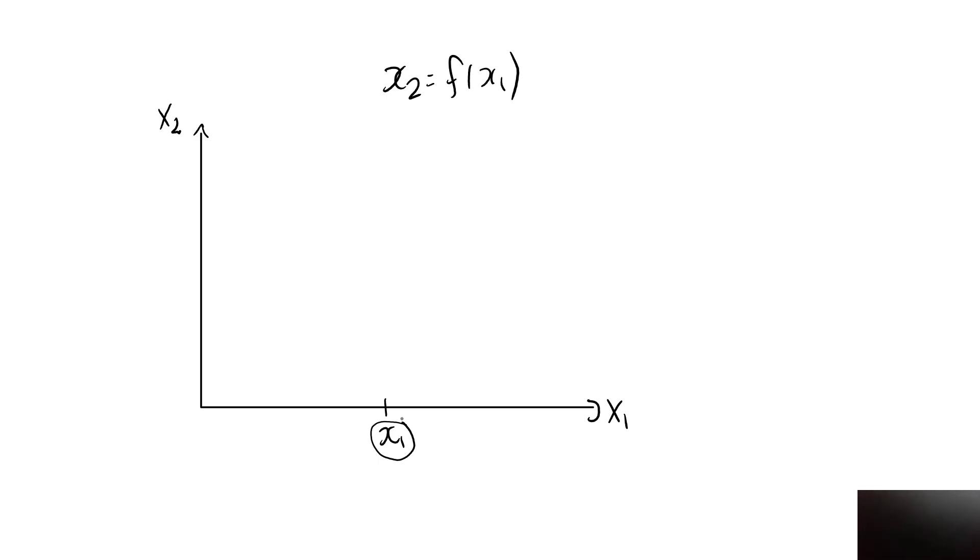Well, let's say that we actually had two bundles, these two, with the same amount of good one, on the same indifference curve. That would not be consistent with strict monotonicity. This bundle contains an equal amount of good one, but strictly more of good two.